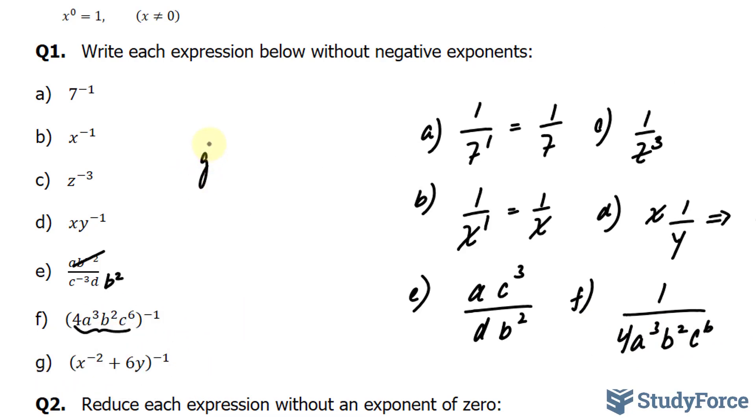In question G, arguably this is the hardest question, this expression is a binomial, and it's being raised to the power of negative 1. So the first step is to write it as 1 over x to the power of negative 2 plus 6y.